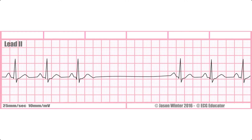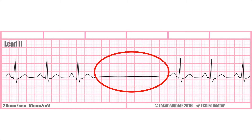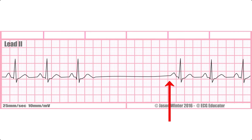A sinus arrest occurs when the SA node fails to initiate an impulse for some period of time. This is identified by the absence of a P wave and the absence of a resulting QRS when those should have occurred, causing a period of cardiac standstill. The pause lasts until either the sinus node resumes its function or another pacemaker site takes over, usually the AV node.